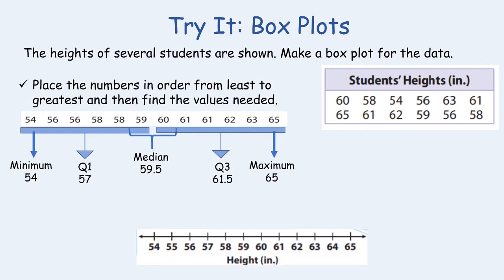Now that we have the five-number summary, we plot those points on a number line. The number line starts at 54 with increments of 1 up to 65, labeled in inches. We plot the minimum (54), Q1 (57), median (59.5), Q3 (61.5), and maximum (65). Then we create our whiskers by connecting the minimum to Q1 and Q3 to the maximum, and then create our box with the middle values. That is how you create a box plot.